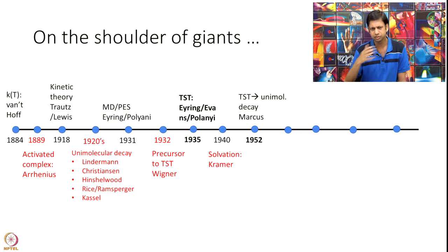1940 saw beautiful work by Kramer on thinking of including solvent effects in transition state theory. I am moving a little bit fast now, a lot of work is done. 1952 Marcus did another beautiful work. He essentially solved a unimolecular decay.